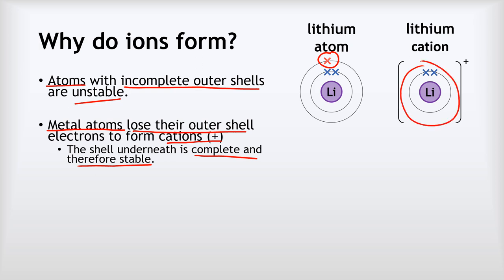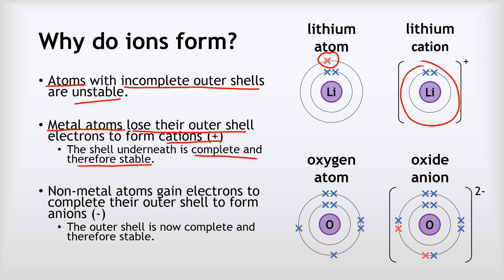Non-metal atoms gain electrons to complete their outer shell. Because they've gained electrons, they form anions, gaining a negative charge, and that means the outer shell is now complete and therefore stable. We can see that with the example of oxygen. Oxygen starts with an incomplete outer shell because there are two gaps. As it forms the oxide ion, it gains one electron and another one, giving it a two minus charge — but importantly, that shell is now complete.